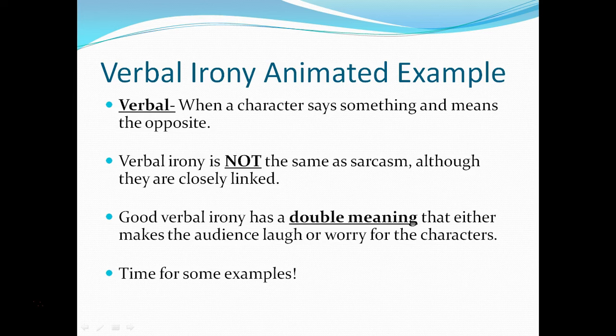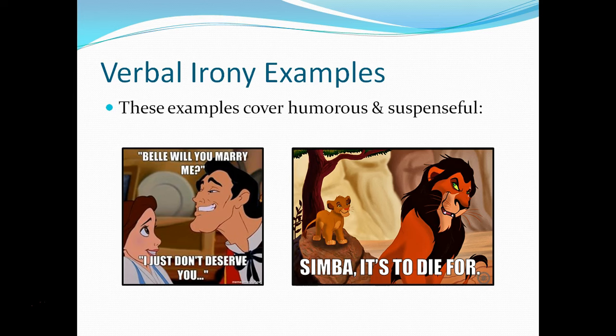Verbal irony is when a character says something and means the opposite. It should be noted that verbal irony is not the same as sarcasm, although they are closely linked. Good verbal irony has a double meaning that either makes the audience laugh or worry for the characters — when we hear a line we can infer that something else is going on. In Beauty and the Beast, when Gaston proposes to Belle and her response is, 'I just don't deserve you,' it sounds like she's saying she's not good enough for him, but in reality he's not good enough for her, which creates a humorous misunderstanding.